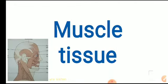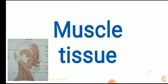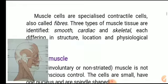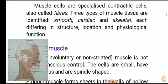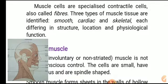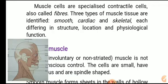What is muscle tissue? Muscle cells are specialized contractile cells, also called fibers. There are three main types of muscles.